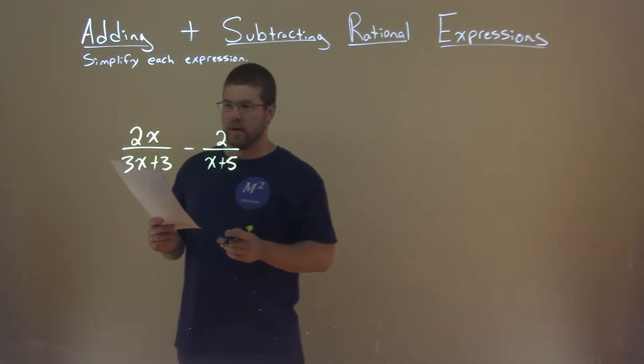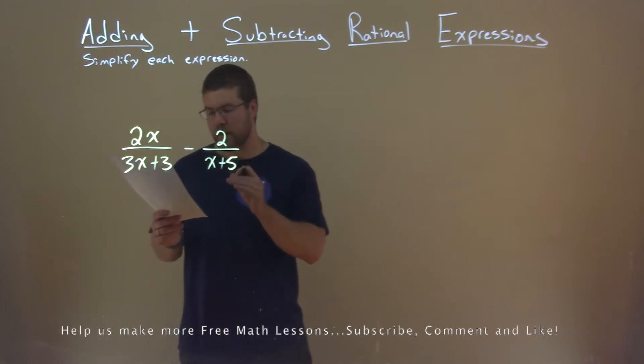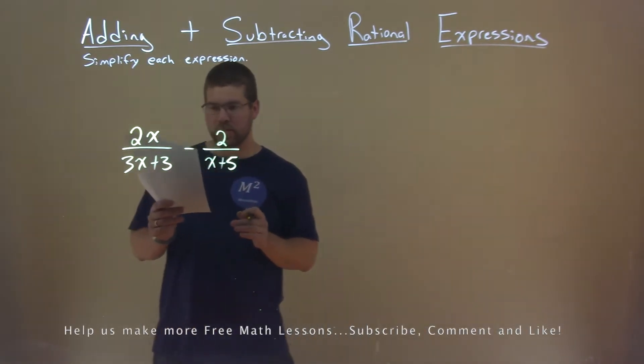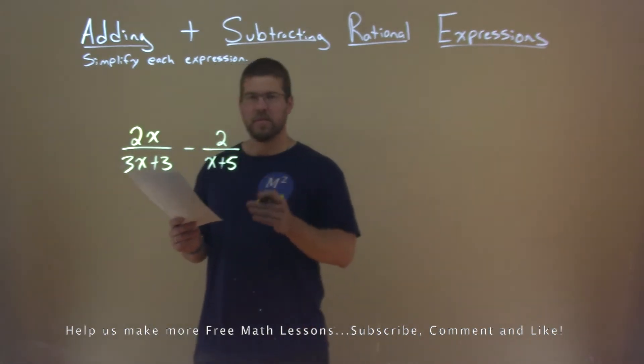We're given this problem right here: 2x over 3x plus 3, minus 2 over x plus 5, and we need to simplify this expression.